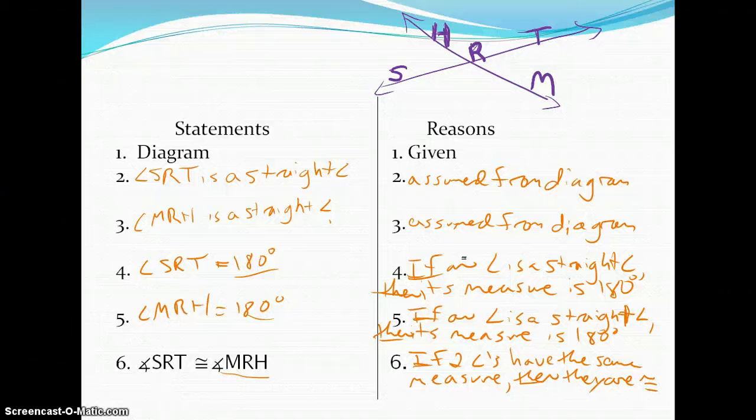In class, we will be using these two theorems. The fact that if two angles are right angles, they are congruent. And if two angles are straight angles, they are congruent. To our advantage to do a couple practice problems with starting you guys out with proofs. Hopefully this was helpful and we'll see you in class.